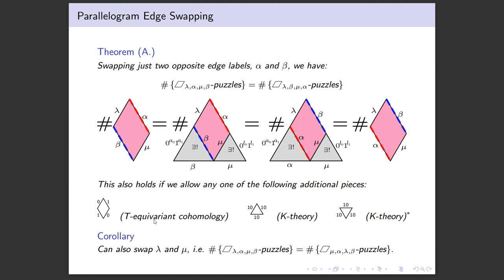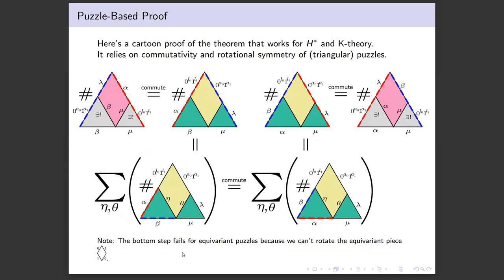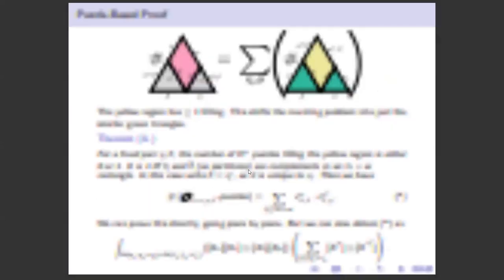This is also true if we allow some different special pieces which compute different cohomology theories. We can also swap lambda and mu. Here is a glimpse of a cute puzzle-based way to do this, where you commute sides of the triangles because puzzles have commutativity, since the cohomology classes commute. You commute these sides of the triangle, fix the edge, and commute again. That doesn't work for equivariant because that piece has no rotations.